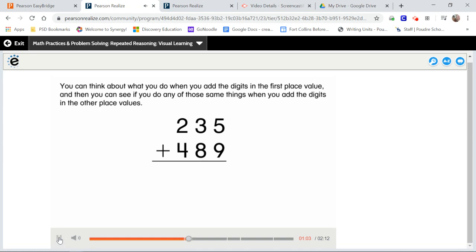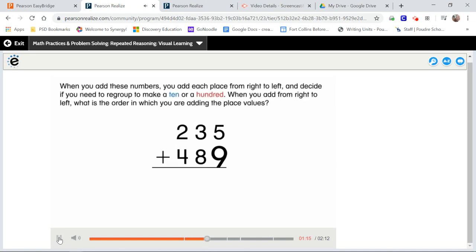You can think about what you do when you add the digits in the first place value, and then you can see if you do any of those same things when you add the digits in the other place values. When you add these numbers, you add each place from right to left and decide if you need to regroup to make a 10 or a 100.